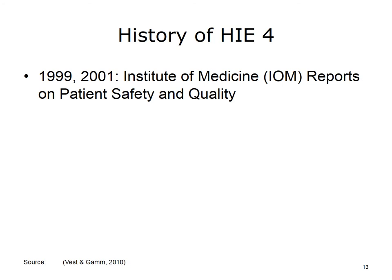In 1999, the Institute of Medicine released the first of a series of reports that ignited a national focus on patient safety and quality of care. The first report, entitled To Err is Human, suggested that as many as 98,000 people die each year as a result of preventable medical errors. A follow-up report in 2001 talked about how health information technologies, including HIE, could be used to reduce errors and improve the efficiency and effectiveness of our health care system. This new national focus on quality had implications for how the history of HIE continued to unfold.